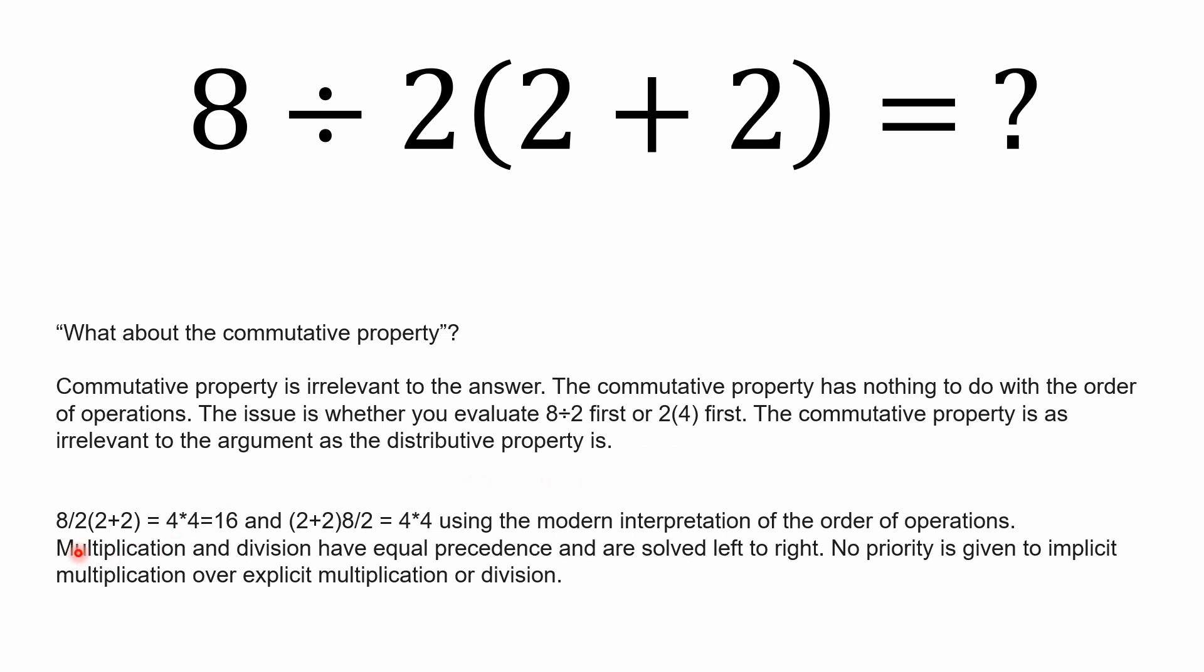For example, like you have 8, and I could get rid of the obelus and put a slash in here, forward slash. 8 divided by 2 times the quantity 2 plus 2 is equal to 4 times 4 equals 16. And also the quantity 2 times 2 times 8 divided by 2 is also 4 times 4. And this is using the modern interpretation of the order of operations. Multiplication and division still have equal precedence. They're solved left to right.